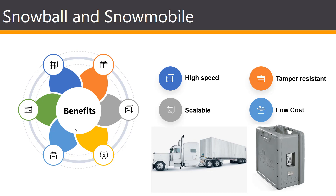On a larger scale, we have the Snowmobile, which is an exabyte-scale data transfer service used to move extremely large amounts of data to AWS. You can transfer up to 100 petabytes per Snowmobile — a 45-foot-long rugged shipping container pulled by a semi-trailer. Snowmobile uses multiple layers of security including GPS tracking, alarm monitoring, 24/7 video surveillance, and an optional escort security vehicle while in transit. All data is encrypted in transit and at rest.